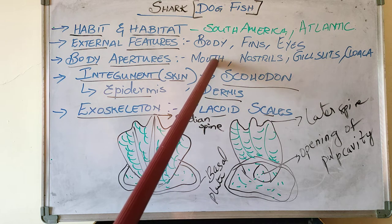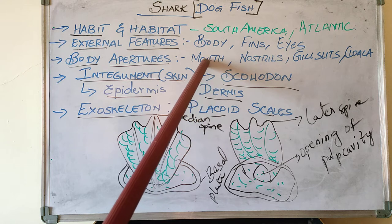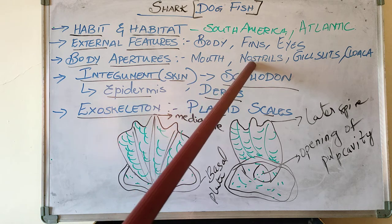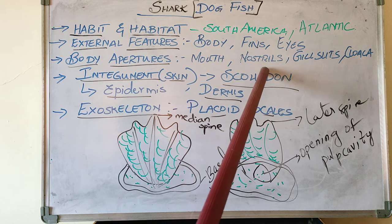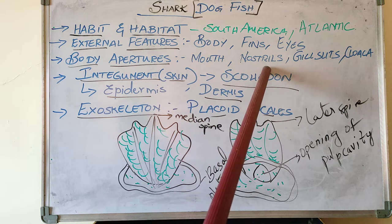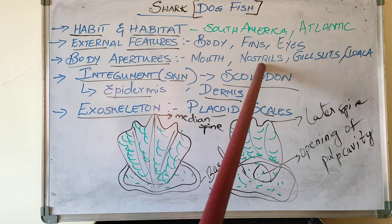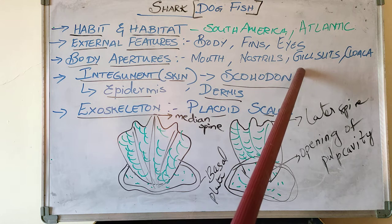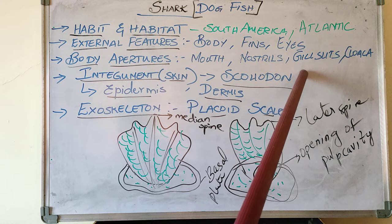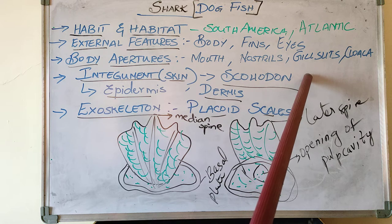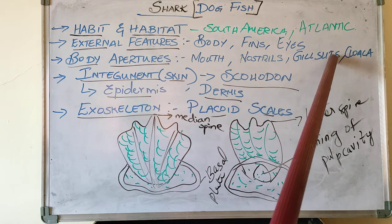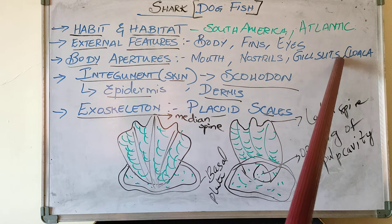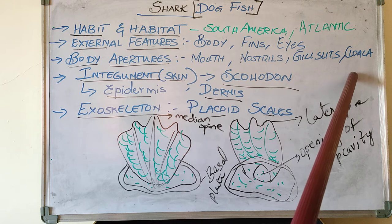The mouth is a transverse slit-like opening present on the ventral side. Nostrils are anterior to the mouth on the ventral side of the body and perform the olfactory function. They do not open into the mouth and hence have no respiratory function. The gill slits are present behind the eyes to each pectoral fin and are called external gill slits. The cloacal aperture is present at the root of the tail, near the caudal fin area, between the two pelvic fins. It leads into a small chamber called the cloaca, which serves the digestive and urinogenital systems.